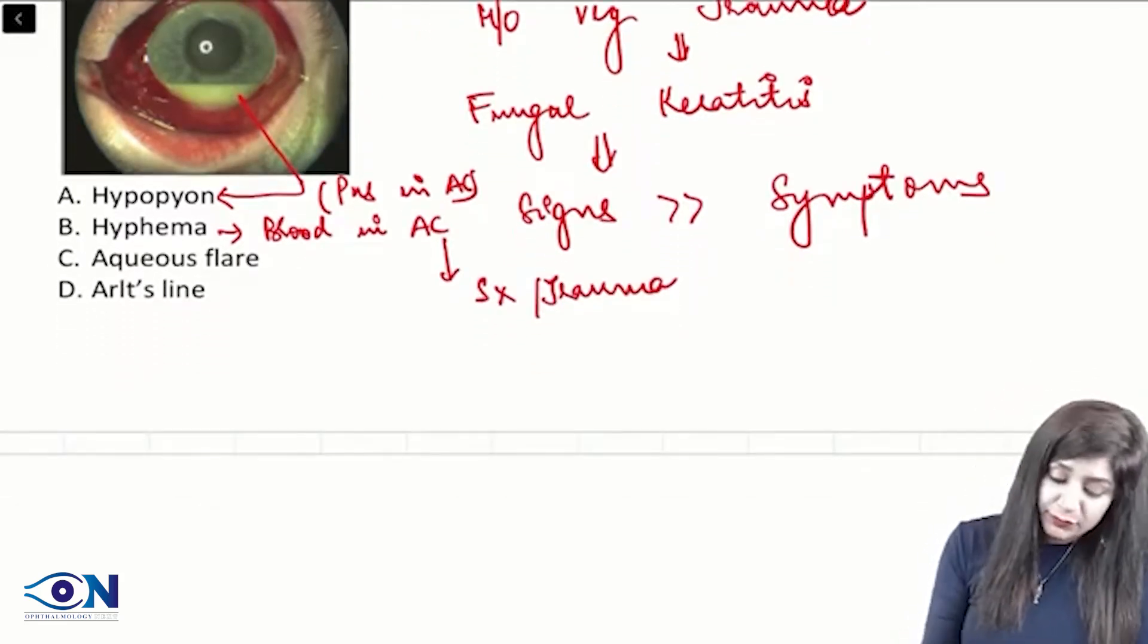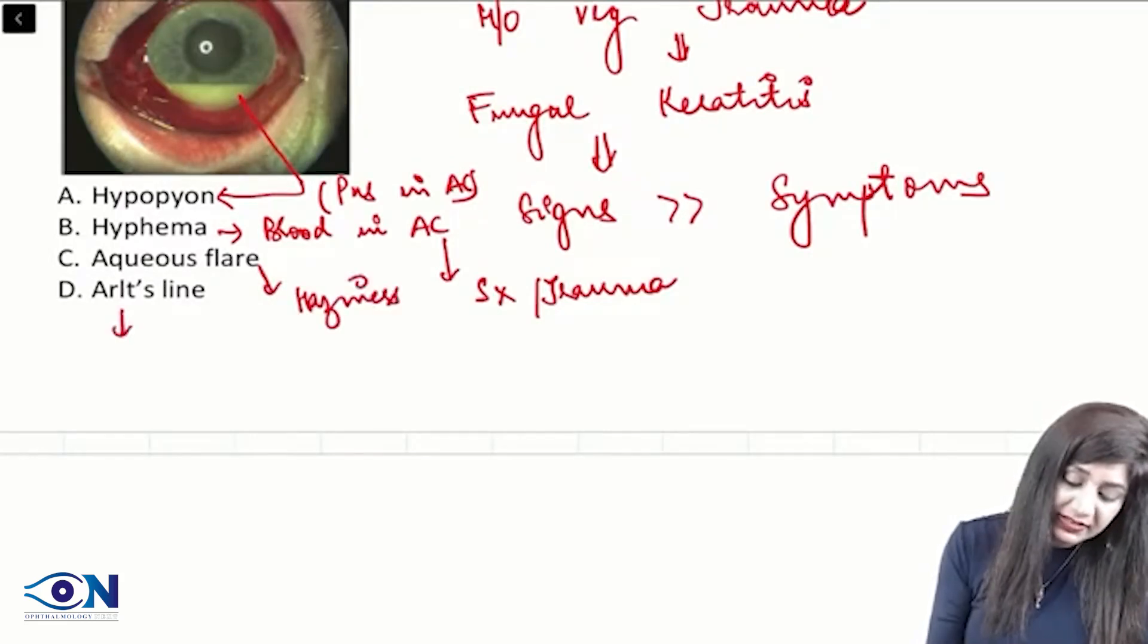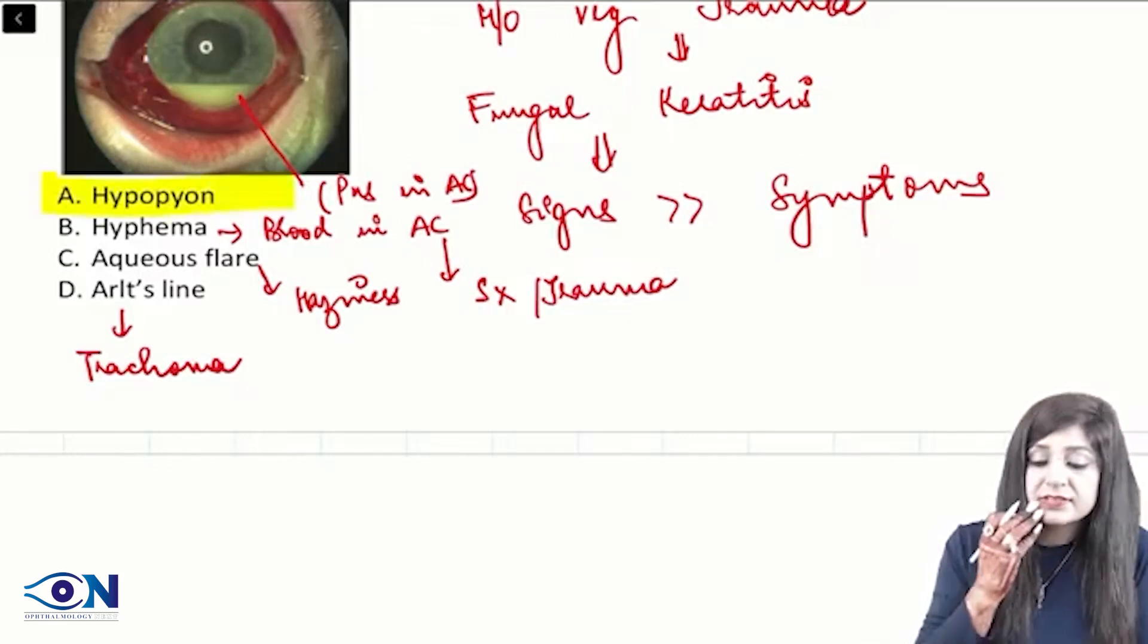While aqueous flare means we will have haziness or turbidity, while Arlt's line is found in trachoma. So it's very clear cut. The answer is hypopyon.